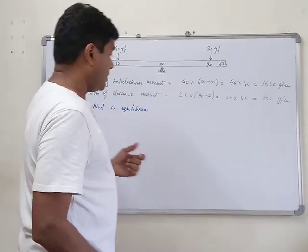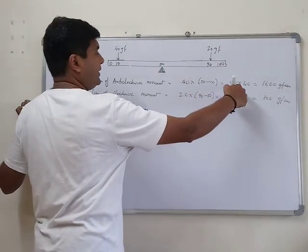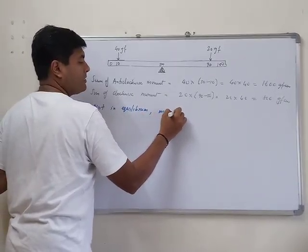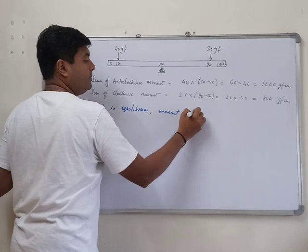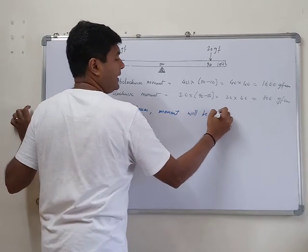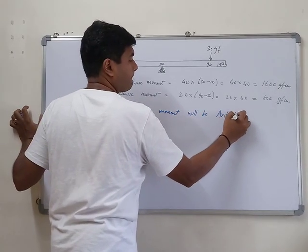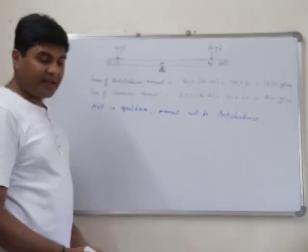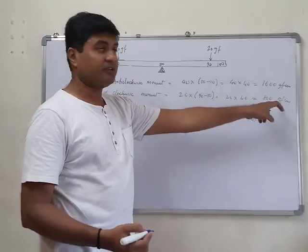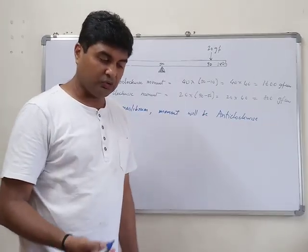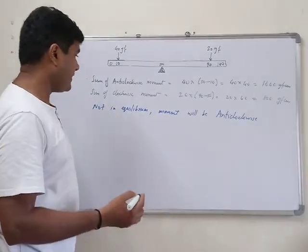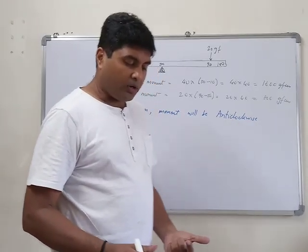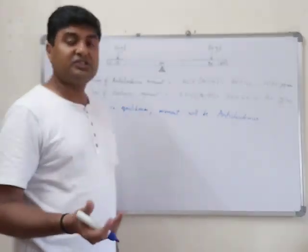The anticlockwise moment is greater, so the rule tilts anticlockwise. The difference is 800 gf·cm, but that is not asked. The next part asks: where should an additional 40 gf weight be placed to bring the rule to equilibrium?